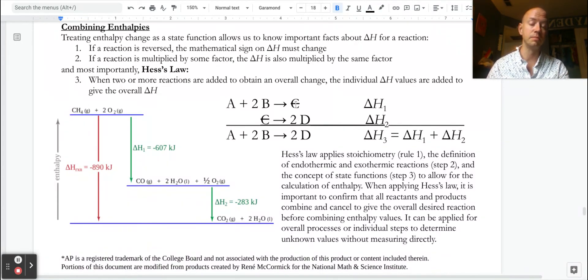One example right here is a simple reaction of if A reacts with 2B to make C, and C makes 2Ds, then A plus 2B could make 2Ds in terms of a combined reaction, and that enthalpy change for this process would be the sum of those two enthalpy changes.